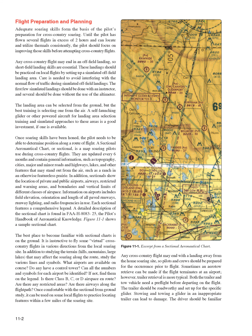The best place to become familiar with sectional charts is on the ground. Study virtual cross-country flights in various directions from the local soaring site, examining terrain features that may affect soaring. Check what airports are available on course, whether any have a control tower, and whether there is Class B, C, or D airspace or restricted areas en route. Once comfortable with the sectional from ground study, use it on local flights to practice locating features nearby.